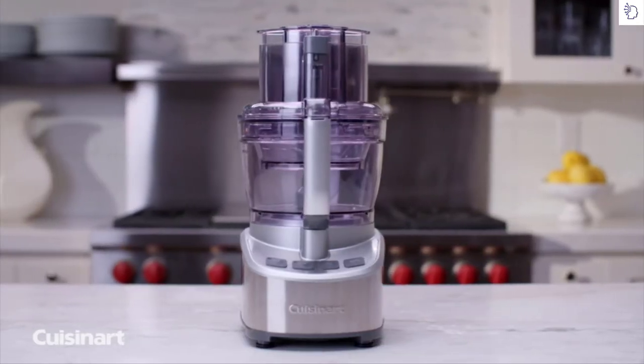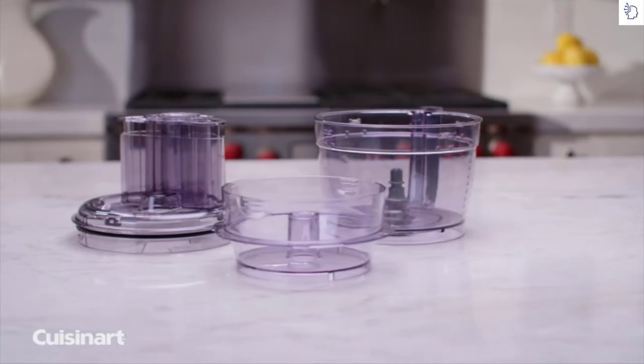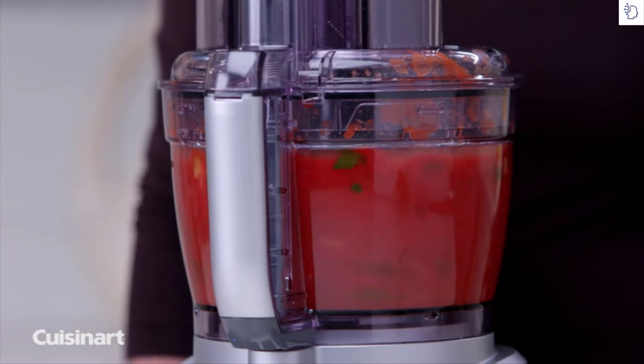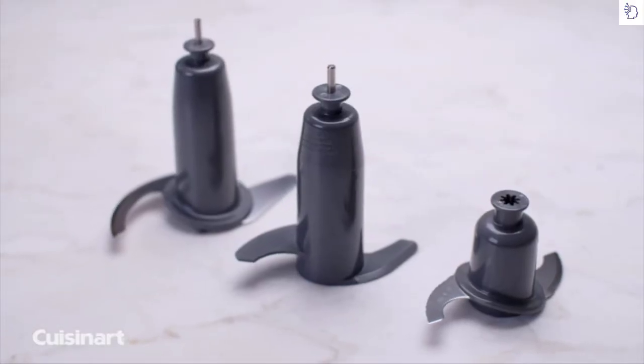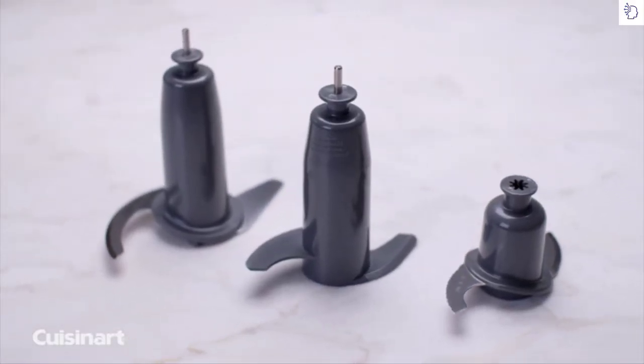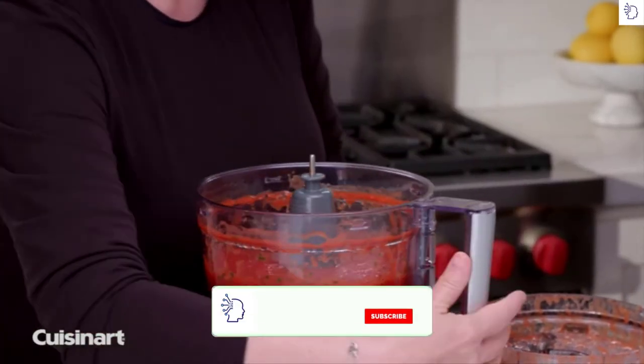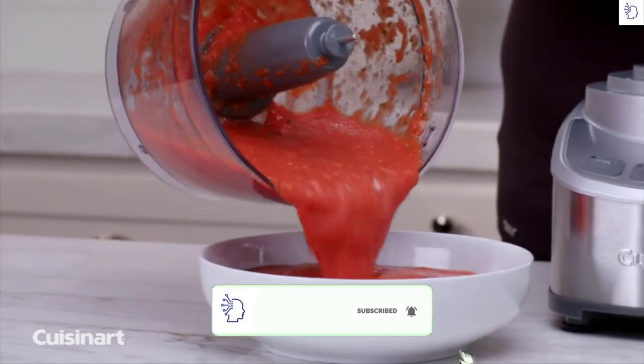The Cuisinart Stainless Steel 13-Cup Food Processor has a seal-tight advantage system that seals the bowl at the top, allowing for maximum bowl capacity usage. And together with the patented blade lock feature, which keeps the blade in place and seals the bottom of the bowl, it allows for ease in processing, pouring, lifting, and handling.